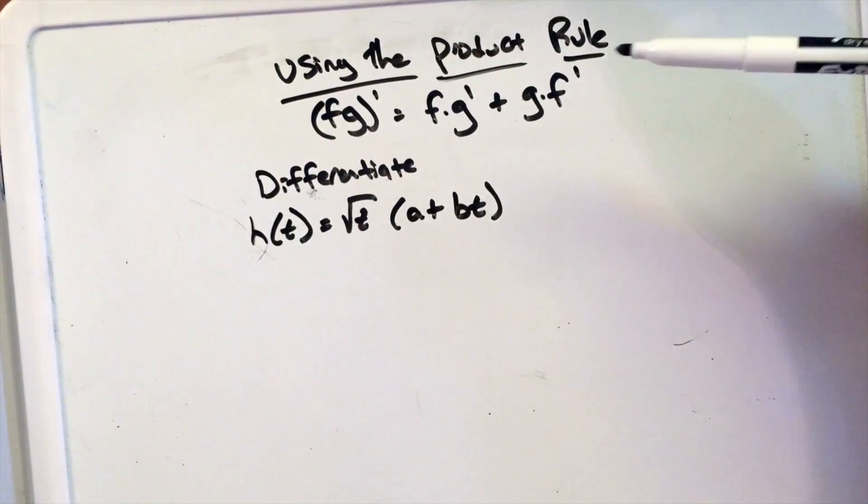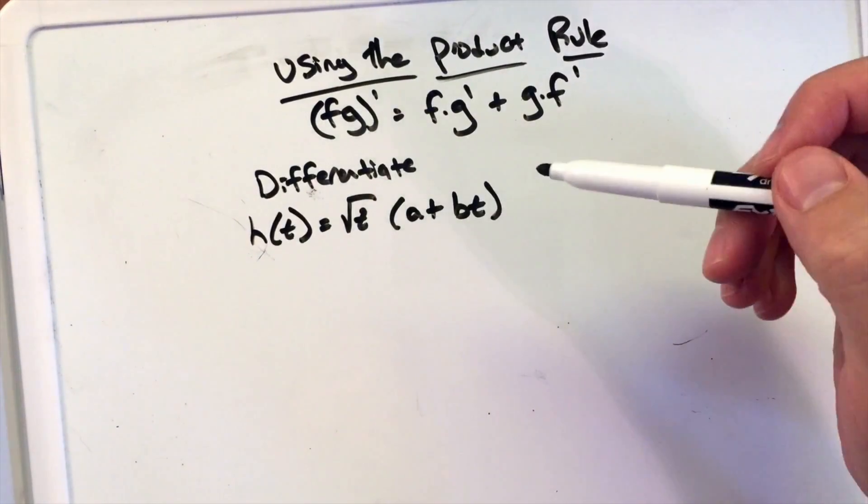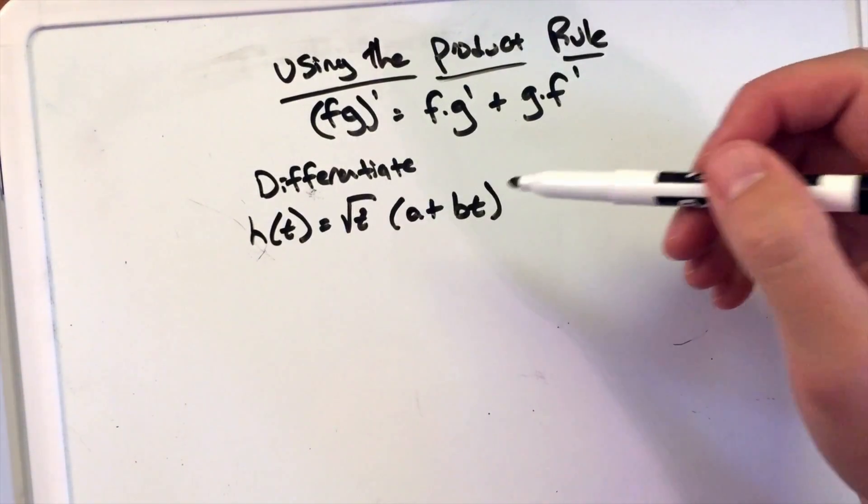In this video, we're going to use the product rule again to differentiate the function h of t equals the square root of t times a plus bt.